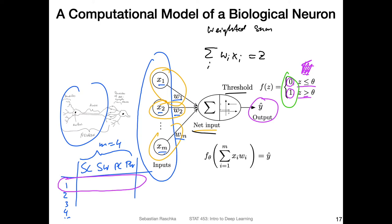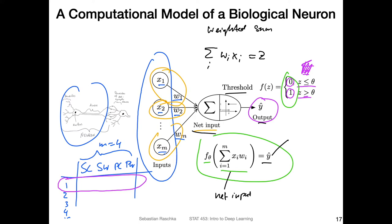One shortcoming is that this is only for binary labels — zero and one — and in iris we have three flower classes. So if we wanted to use the standard perceptron for iris, we would have to simplify to only two flower classes. The threshold function, abbreviated here, takes the weighted net input and returns the predicted class label y-hat.